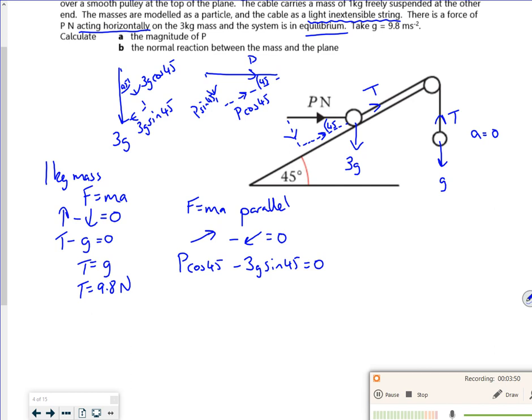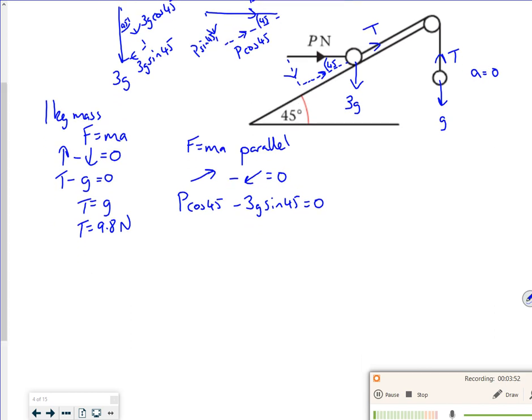So that's equal to zero. So that's quite nice because I've got P would be 3g sin 45 over cos 45. Well sin 45 over cos 45 is tan 45. Tan 45 is 1. So potentially, P would be... Oh, I missed out the tension haven't I though. Oh, that's not good. I made a mistake.